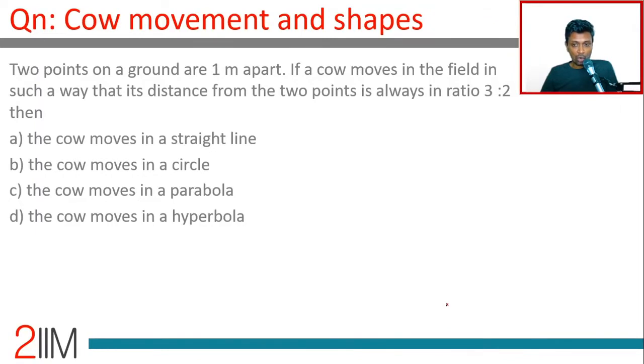Two points on a ground are one meter apart. If a cow moves in the field in such a way that its distance from the two points is always in ratio 3 is to 2, then what's happening? These are kind of locus questions. What is the locus of this? It is best to think of a coordinate geometry framework and plug in coordinates.